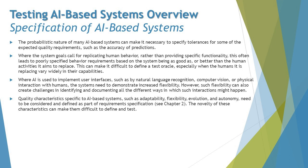Challenge number five: where AI is used to implement user interfaces such as natural language recognition, computer vision, or physical interaction with humans, the system needs to demonstrate increased flexibility. However, such flexibility can also create challenges in identifying and documenting all the different ways in which interactions might happen. Common examples include auto-detecting languages on platforms, computer vision like CCTV, and physical interaction with robots — for instance, saying 'Hey Cortana' and it wakes up and starts talking to you.